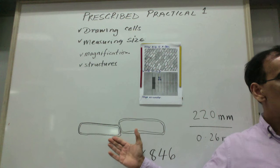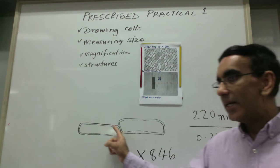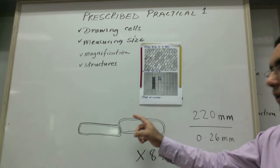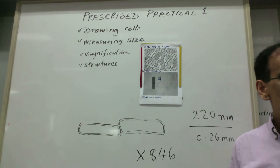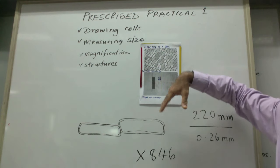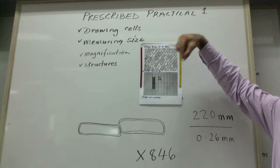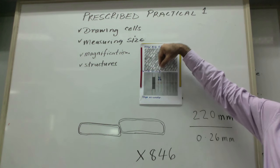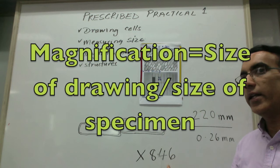It all depends on how big you draw your specimen on your piece of paper, because you're reporting that this is 846 times bigger than the actual thing. That's what magnification is. Micrographs and diagrams of cells and pictures come with scales, and from the scales you can figure out the magnification. Magnification is size of drawing divided by the size of the specimen.